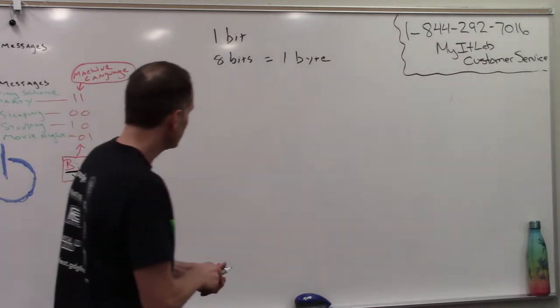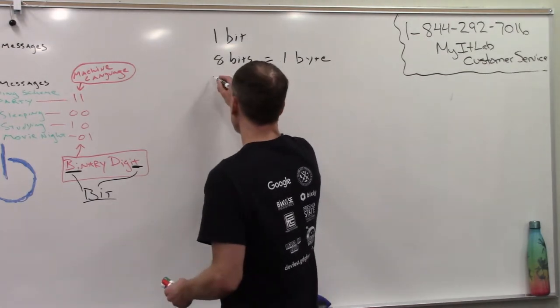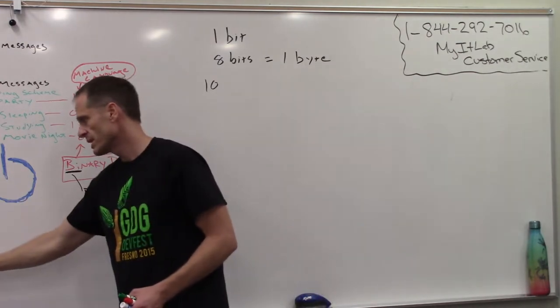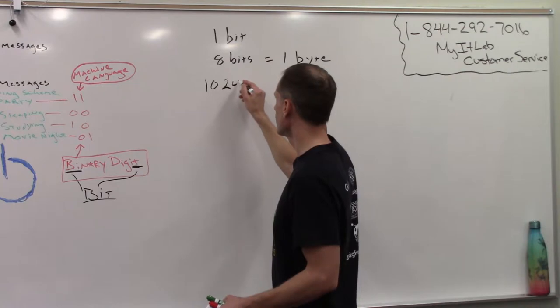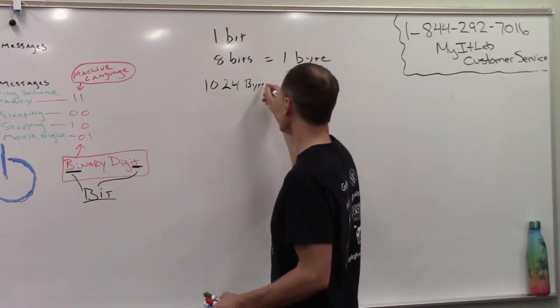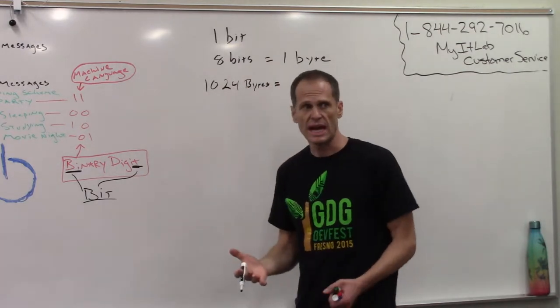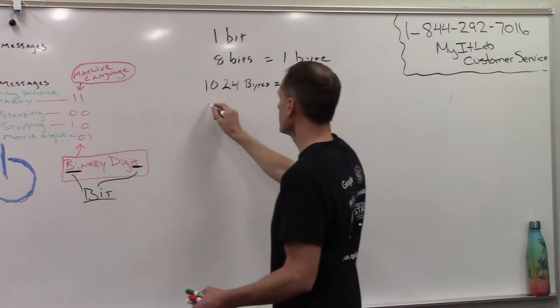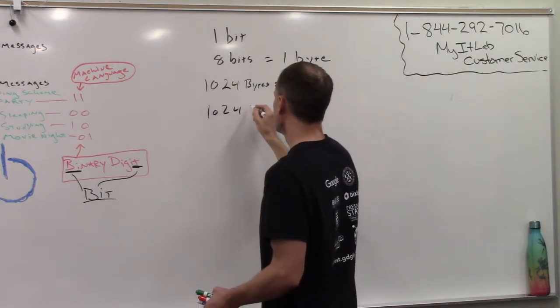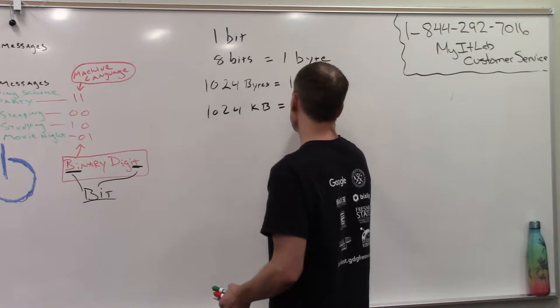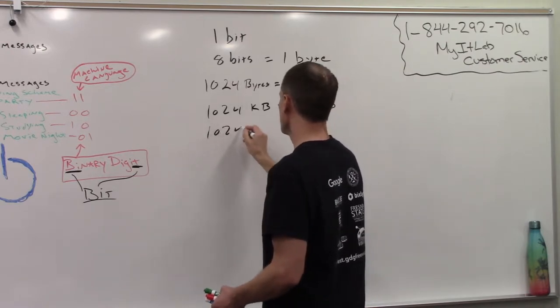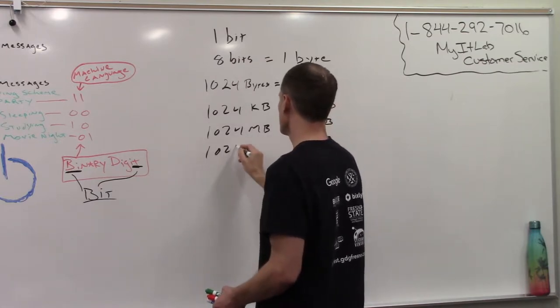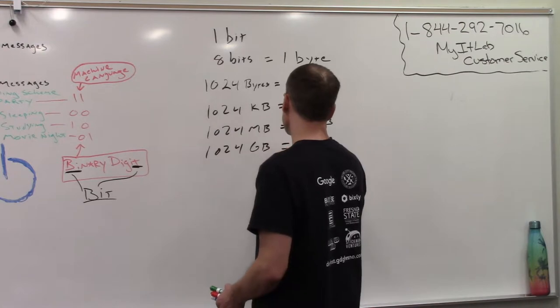So eight bits is one byte. If we add 1,024 bytes, what's a kilo? It's 1,000, right? So that's close enough that we call it a kilobyte. And if we add 1,024 kilobytes, that's equal to 1 megabyte. And if we add 1,024 megabytes, that's equal to 1 gigabyte. And if we add 1,024 gigabytes, that's equal to 1 terabyte. See the pattern?